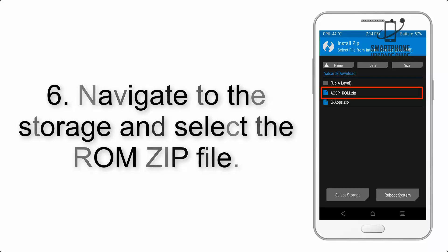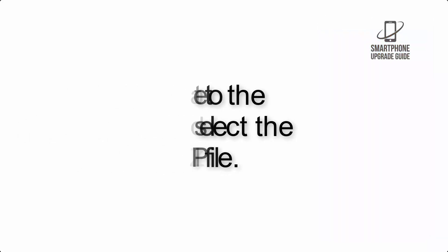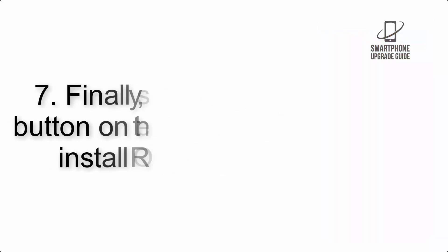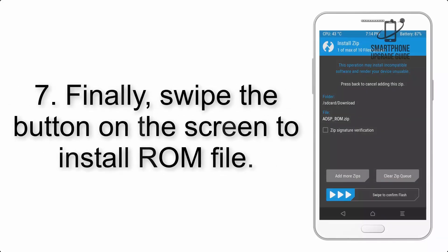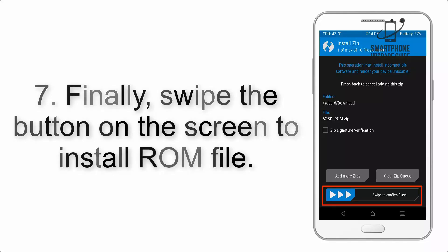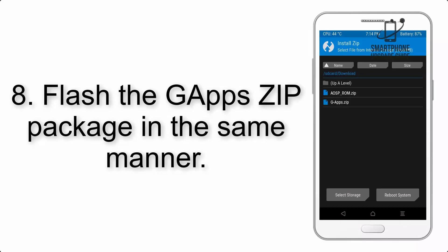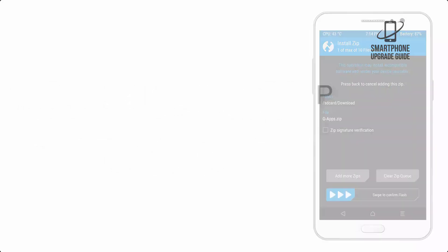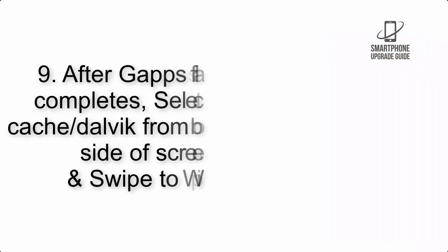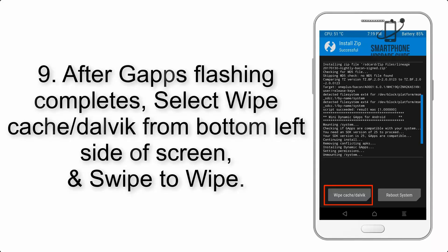Step 5: Go back to the recovery main screen and tap on the Install button. Step 6: Navigate to the storage and select the ROM zip file. Step 7: Finally, swipe the button on the screen to install the ROM file.